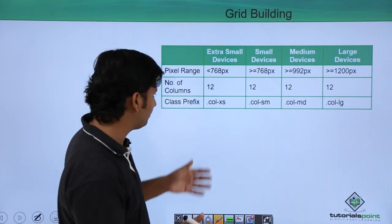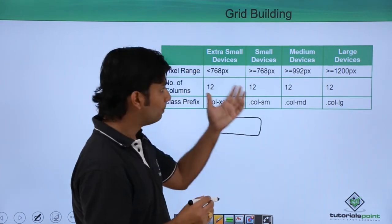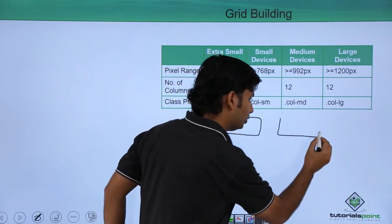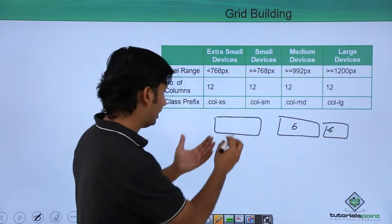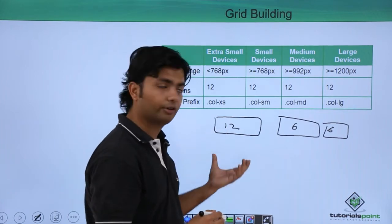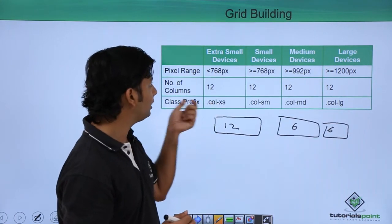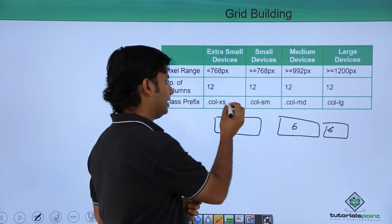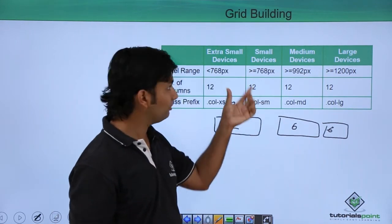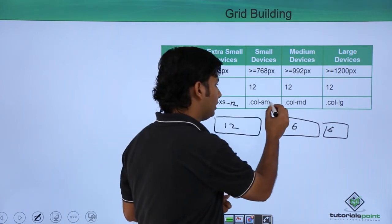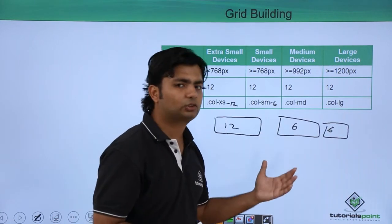For example, for extra-small devices you might want all 12 columns in the first row, but for a small device you might want two items side by side — so you'd use six and six columns. The class prefixes work like this: col-xs-12 occupies all 12 columns, and col-sm-6 dedicates six columns to a particular div on a small device such as a tablet.